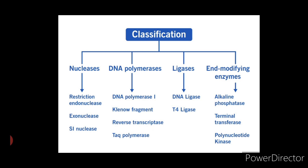Now let us understand each and every class of enzymes — its function and its examples. First, nucleases. Nucleases are enzymes which degrade DNA molecules by breaking the phosphodiester bonds that link one nucleotide to the next. For example, restriction endonuclease, exonuclease, and S1 nuclease. Second, DNA polymerases. DNA polymerases are enzymes that synthesize a new strand complementary to an existing DNA or RNA template.